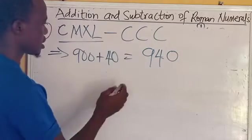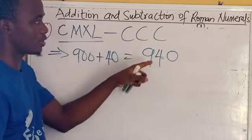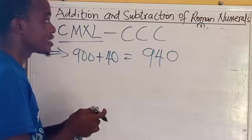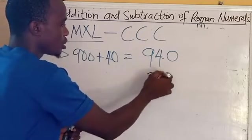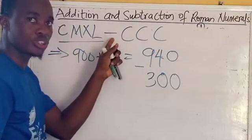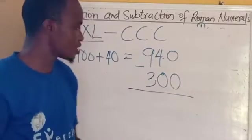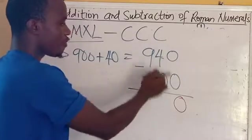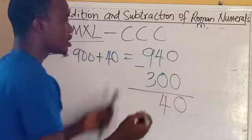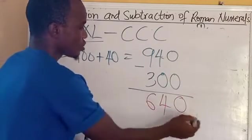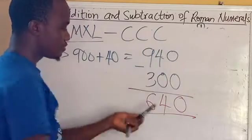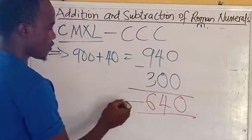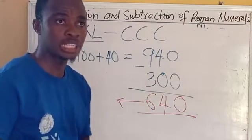Now let's look at CCC. C is 100, this is also another 100 and this is also another 100. When you combine the three together, we are going to have 300. We are going to subtract because of the subtraction sign. 0 minus 0, we have 0. 4 minus 0, we have 4. 9 minus 3, we have 6. You can see that we have the value to be 640. Now we need to take this 640 back to Roman numerals.